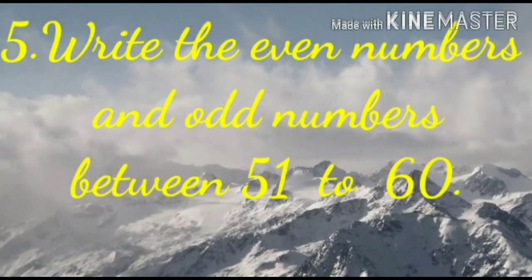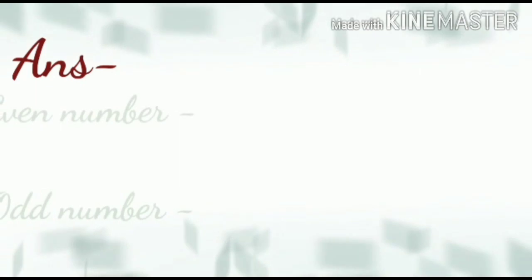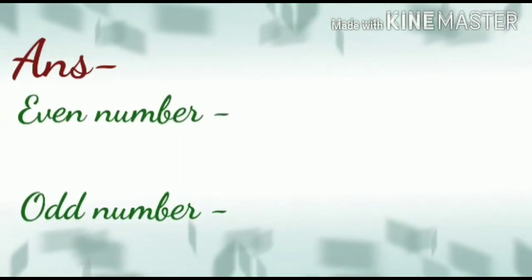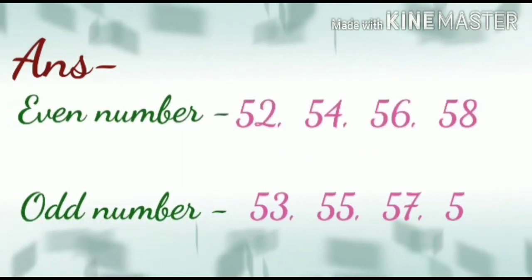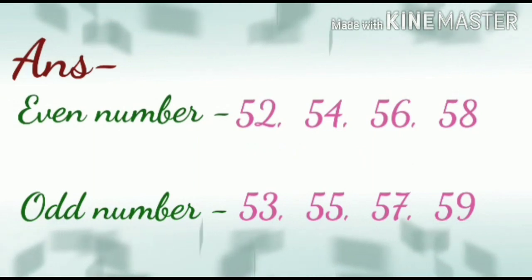Question number 5: Write the even numbers and the odd numbers between 51 to 60. So, the answer will be even numbers 52, 54, 56, 58. And the odd numbers will be 53, 55, 57, 59.